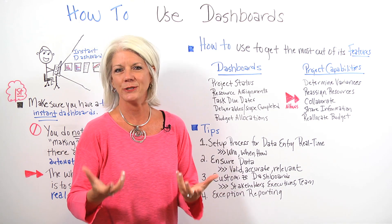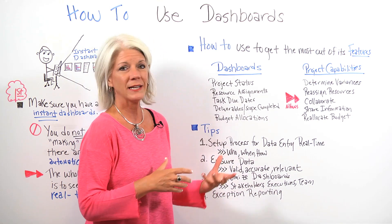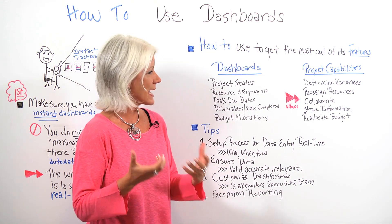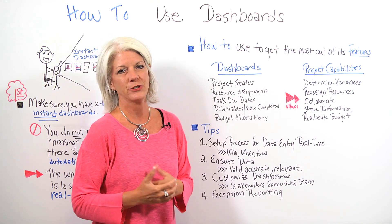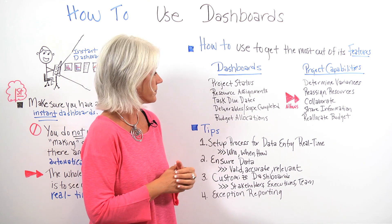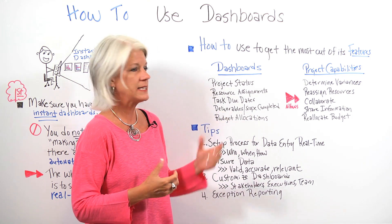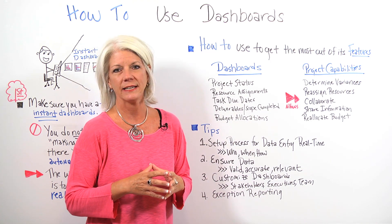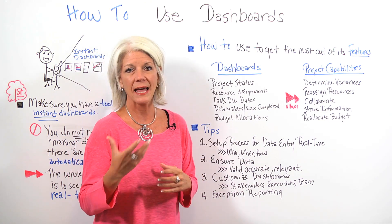You also get to see your resource assignments — are there people who are overloaded, or are there people who are waiting on their deliverables or tasks to be done that you can reassign? It also lets you look at your task due dates to see if any tasks are overdue, look at your deliverables in scope to see if they've been completed, and look at your budgets to see if anything needs to be reallocated.